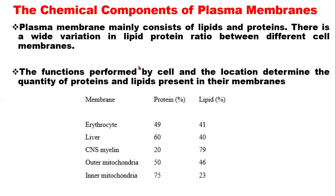Building on the previous lecture, we are discussing the chemical components of plasma membranes. Plasma membranes mainly consist of lipids and proteins, and there is a wide variation in lipid and protein ratio between different cell membranes. The functions performed by the cell and the location determine the quantity of proteins and lipids present in their membranes. If you look at this table...